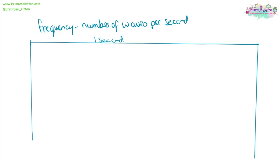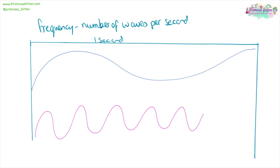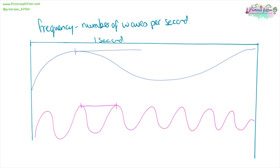The frequency is the number of waves per second. So if we look at this block here as a second in time, something that will have a low frequency — we are not going to see many peaks in one second. But something that had a high frequency, we would see lots of peaks or lots of waves within one second. You'll notice that for the high frequency one it has a low wavelength, whereas for the low frequency one it has a high or a long wavelength.